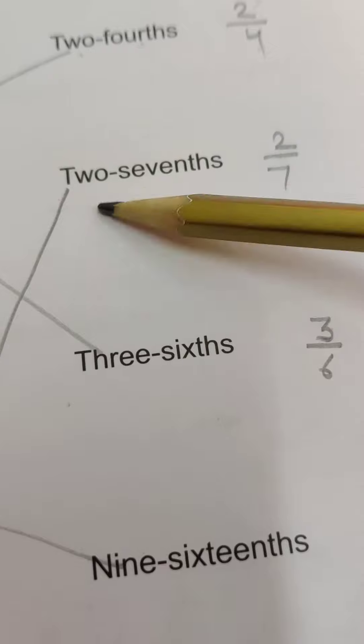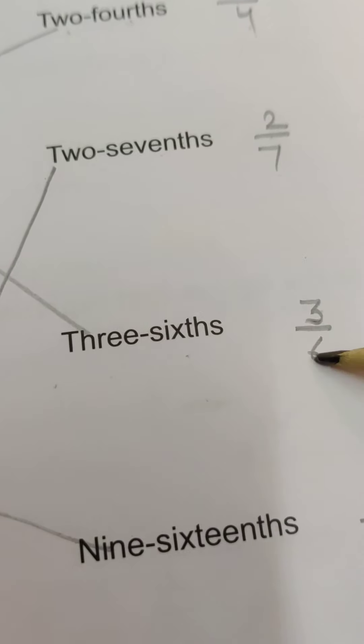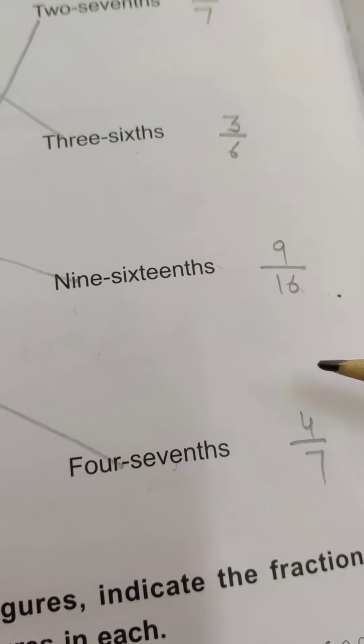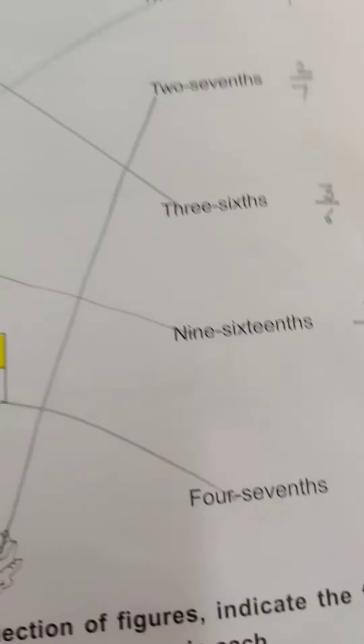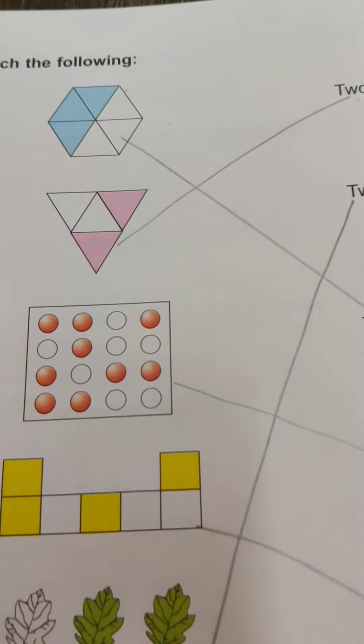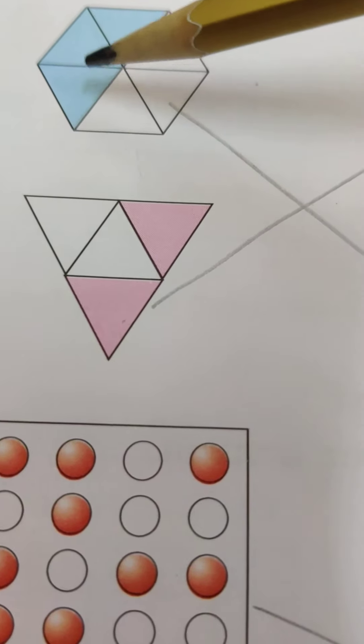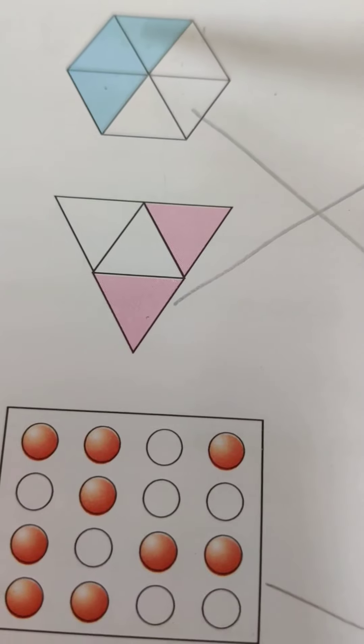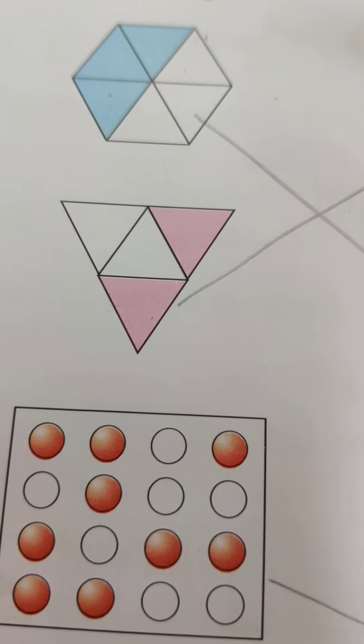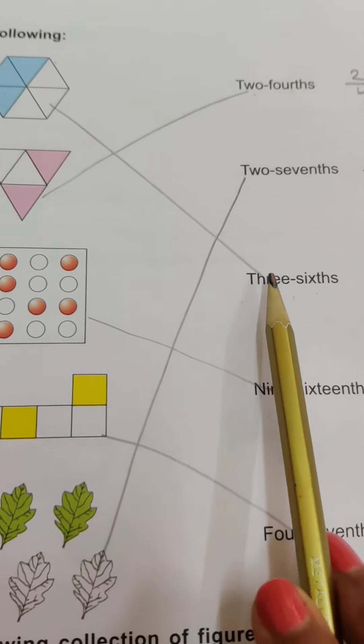Now we have to match it. First, if we talk about the first figure, how many boxes are in the first figure? One, two, three, four, five, six. So total is 6. Now this is shaded. How many boxes are shaded? Three. So this is what we should make: three by six. Where is this? This is three-sixths. We will match it.